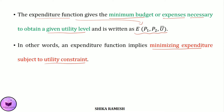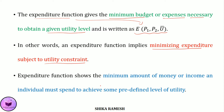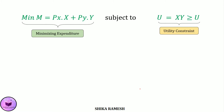In very simple terms, we can state an expenditure function as the minimum amount of money or consumer's income that an individual must spend in order to achieve some predefined level of utility. The optimization problem can be written as minimizing M = PX·X + PY·Y, subject to the utility constraint U = XY ≥ U̅.